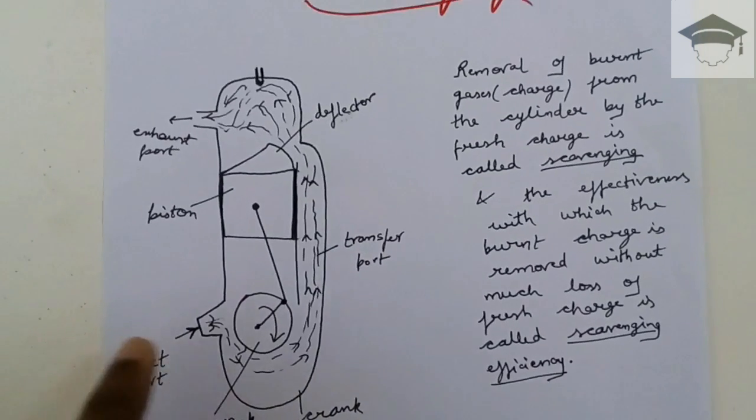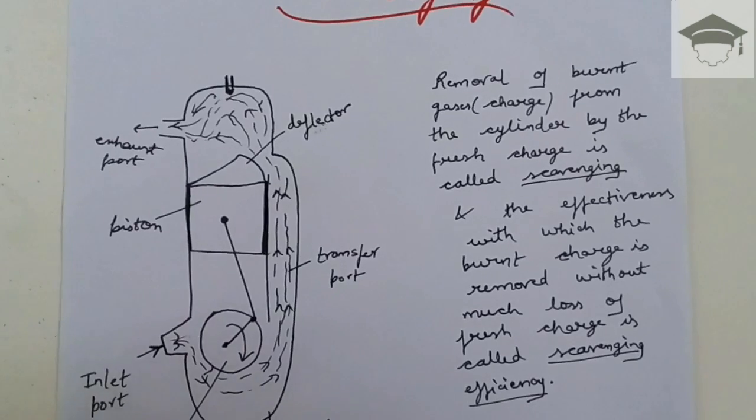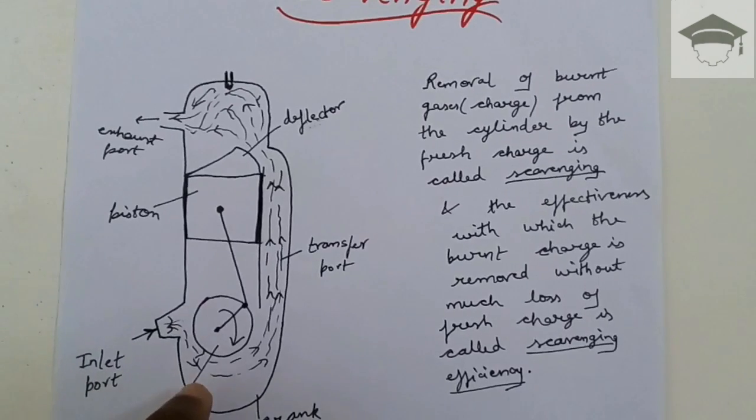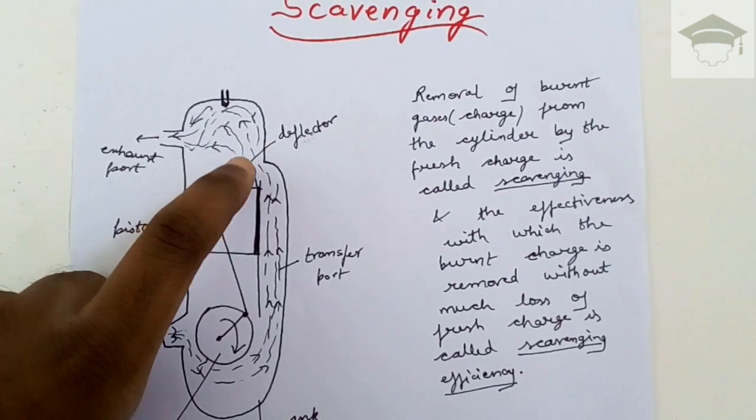Scavenging is the removal of burnt gases after combustion has taken place. The fresh air or charge enters and travels through the transfer port.